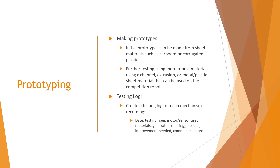Prototyping can then be conducted from these ideas to figure out what would meet the challenge the best. Initial prototypes can be made as a proof of concept for certain ideas. These initial prototypes can be made from sheet materials such as cardboard or coroplast for fast and inexpensive prototyping. If certain design ideas need to be further tested, more robust materials including C-channel, extrusion, or metal/plastic sheet material can be used to create prototypes similar to what would be used on the competition robot. A testing log should be created for each mechanism to document the changes that are made for different tests.